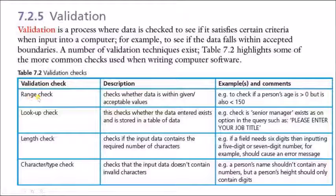We have the range check. Range check is to check whether the data is within the given acceptable values. Like to check if the person age is greater than zero but also less than 150. Also for the range check, if I want to check the score or the mark for the student for the first month exam, I will find that the maximum mark is 20 and the minimum is zero. So the student mark should be within the range of zero to 20.